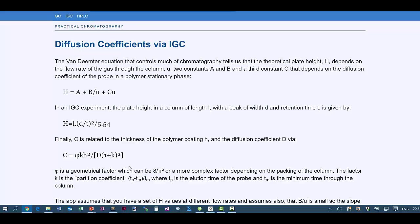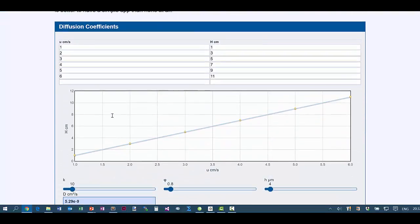So, how do we get to know what C is? Well, if and this is a good assumption, B over U is very small, then the slope of H versus flow rate U will give you C directly. And that's what we find in the app.